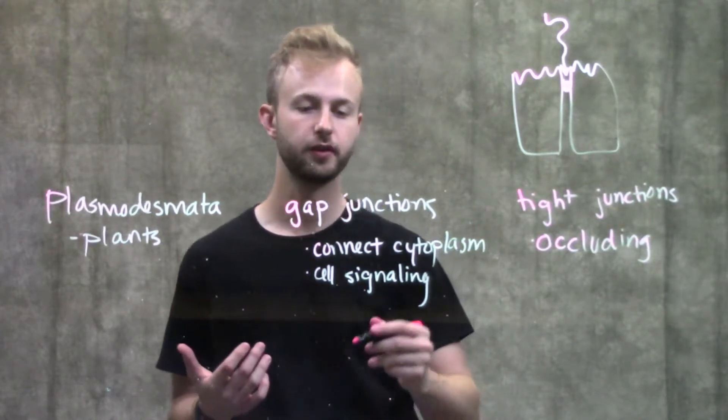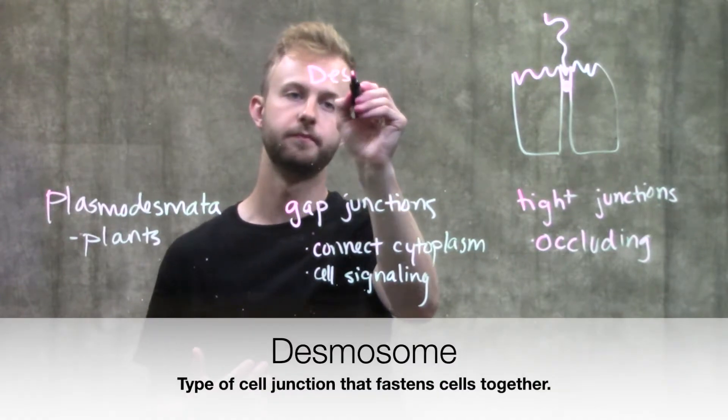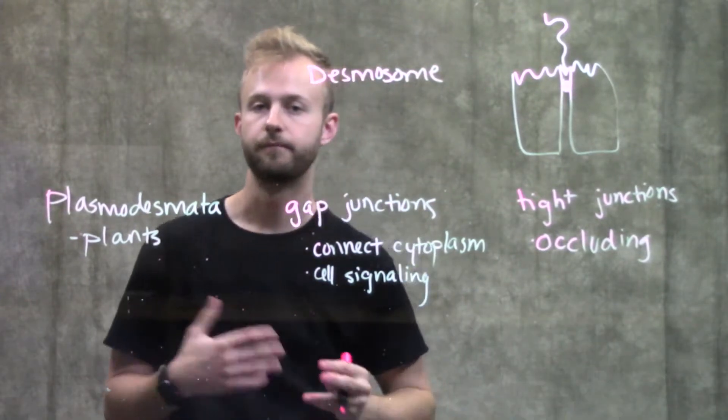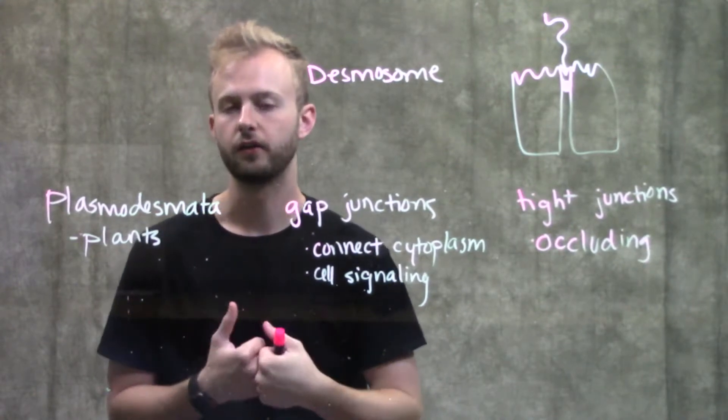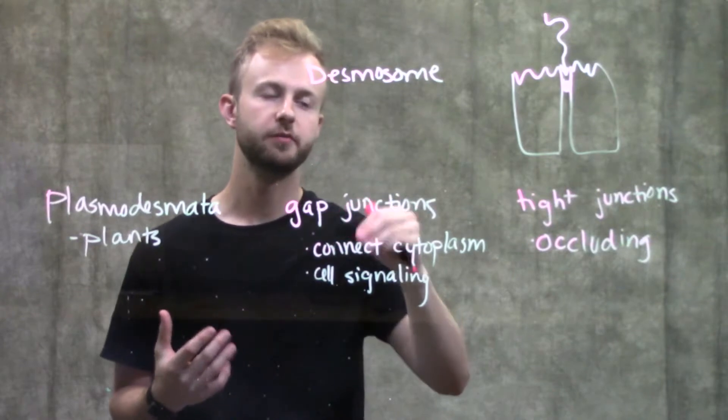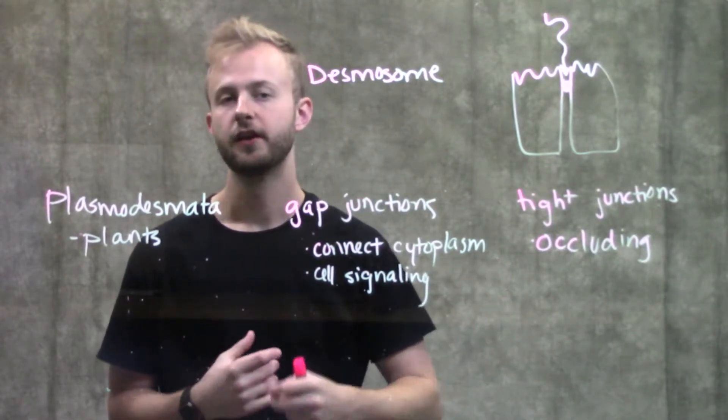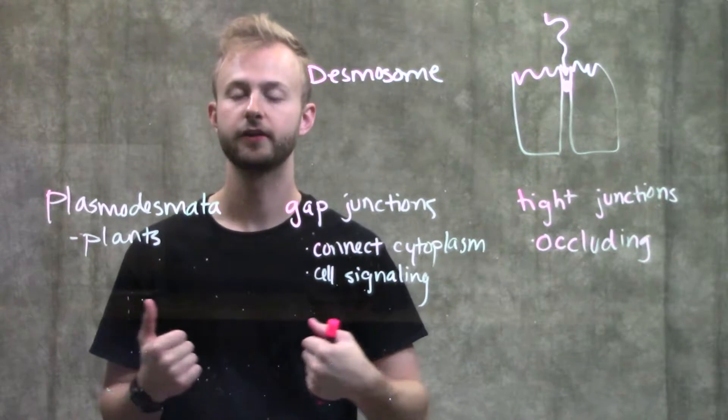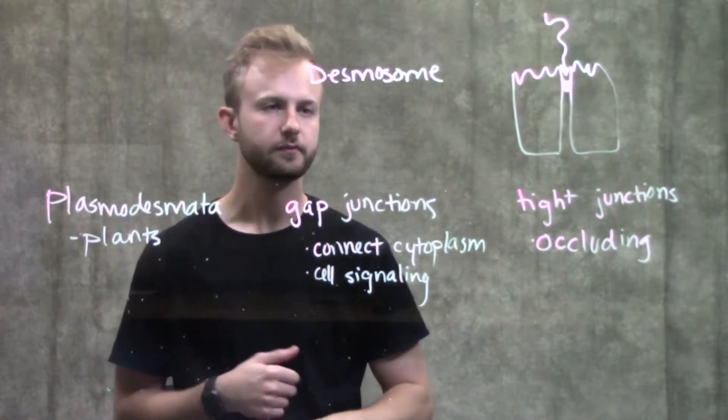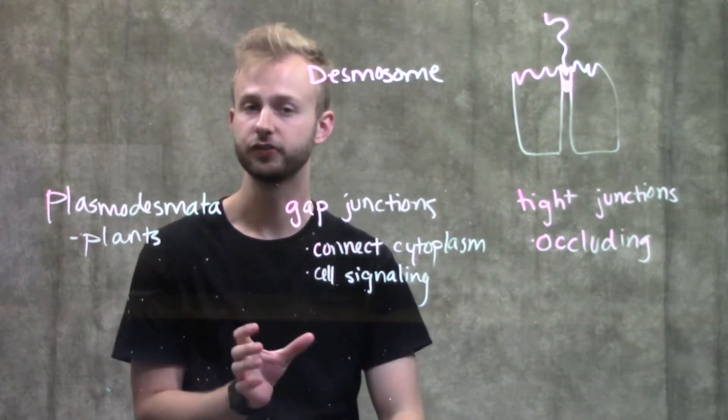The last junction we're going to look at is called a desmosome. Desmosomes are also very common between epithelial cells, but desmosomes are more flexible than tight junctions. Desmosomes allow epithelial layers to stretch and contract a little bit. This is again really important in muscle cells.